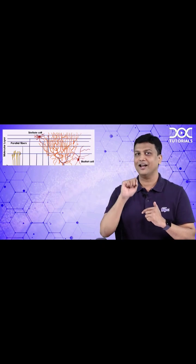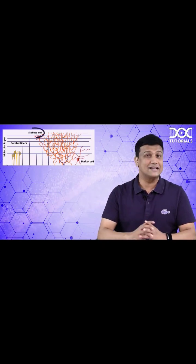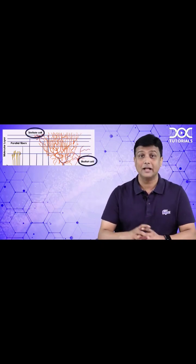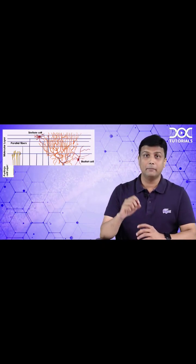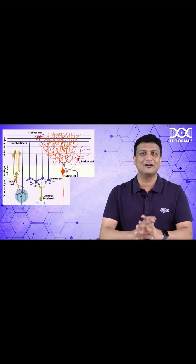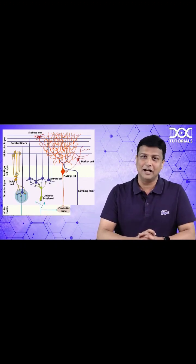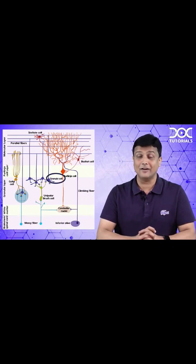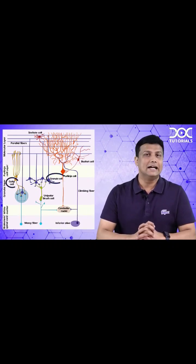Across these three layers, there are five different types of cells. In the outermost molecular layer, we have stellate cells and basket cells. In the middle Purkinje layer, we have Purkinje cells. And in the innermost granular layer, we have granular cells as well as Golgi cells.